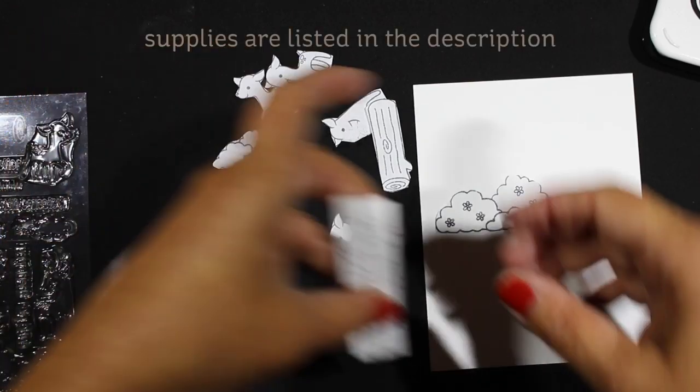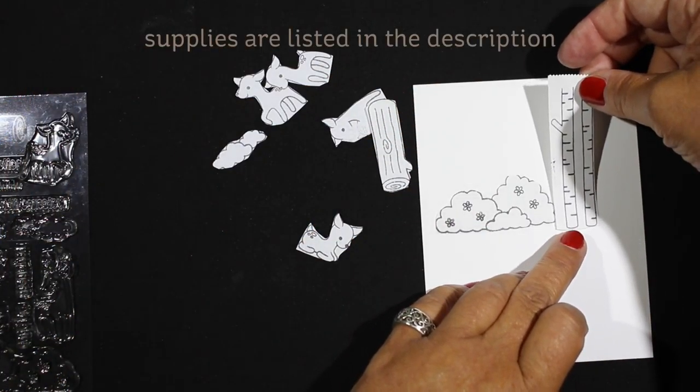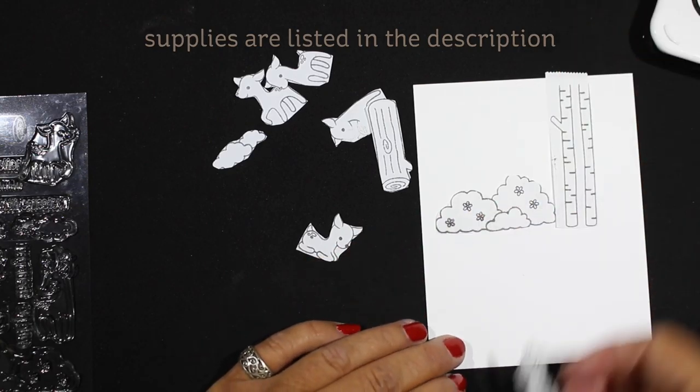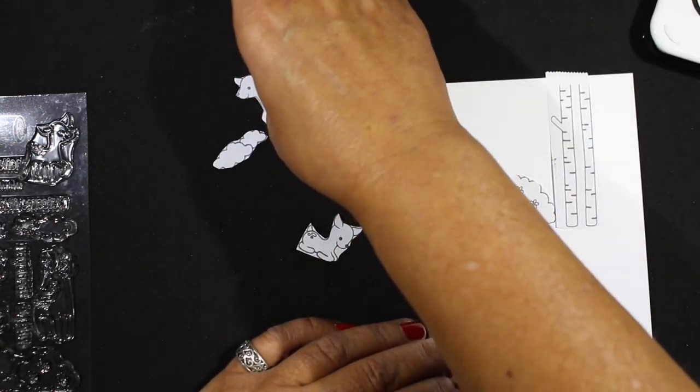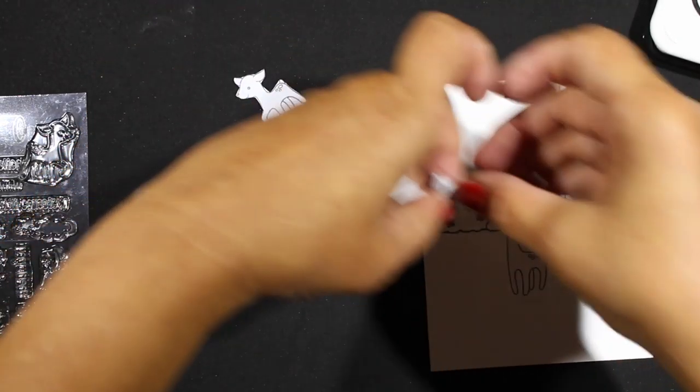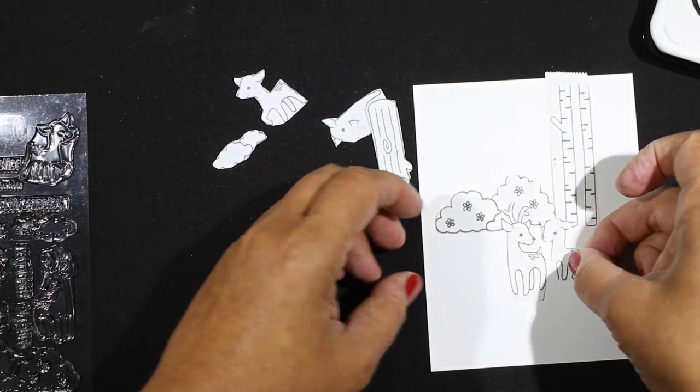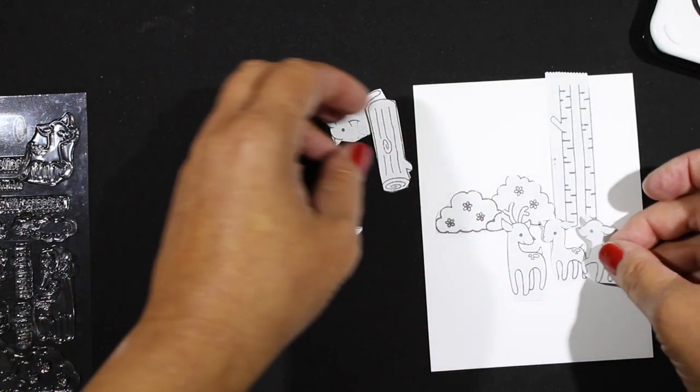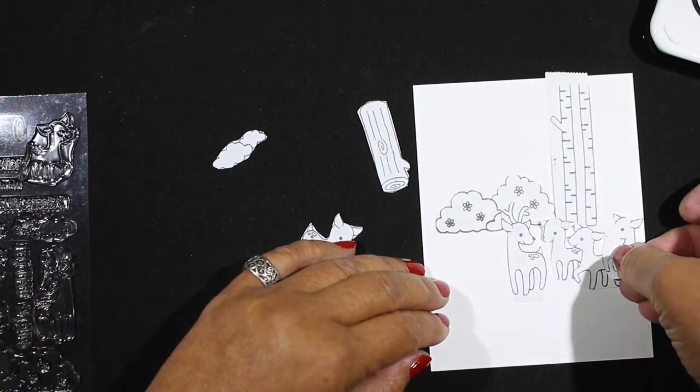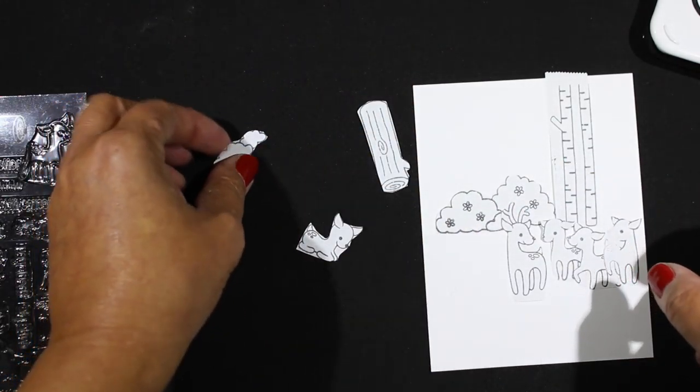So my first thing to do when I am going to use a whole stamp set is to stamp them all on some masking paper. This is Judy Kin's Eclipse tape and it comes in six inch and one inch rolls. I like the six inch because you can get a lot on there and I'm going to place them wherever I kind of think I want my scene to start.